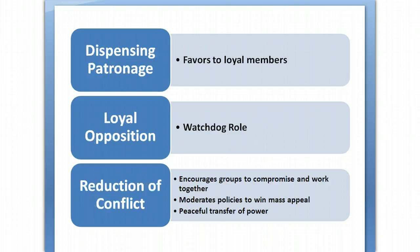The fourth function is to dispense patronage — giving favors to people who supported the party or candidate, often in the form of government jobs. If I helped someone get elected, they might help me get a government job once in office. The fifth role is loyal opposition: parties act as watchdogs. When one party makes a mistake or does something perceived as harmful to the country, the other party will tell constituents — pointing out bad decisions to get voters to agree with them.